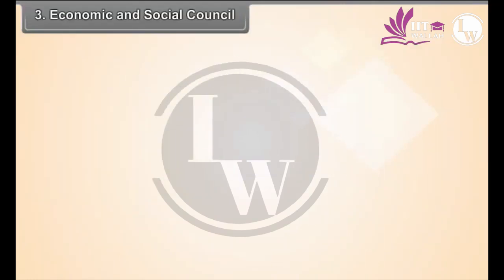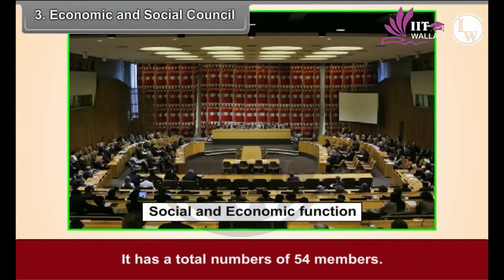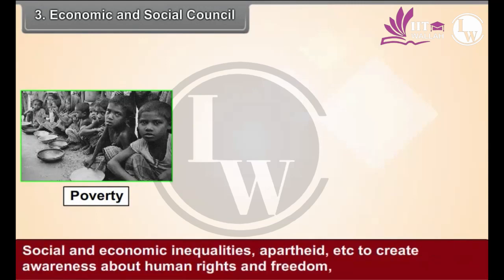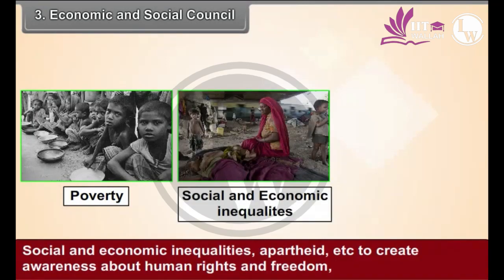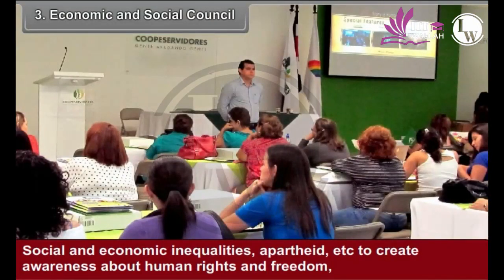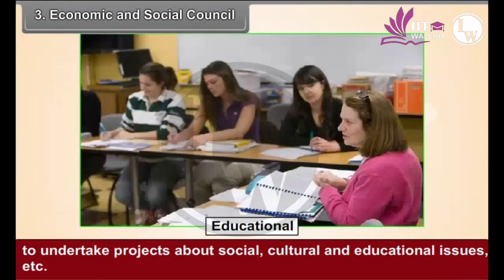The Economic and Social Council was established to coordinate the social and economic functions of the UN. It has a total of 54 members. This Council performs functions like initiating discussions on the global level on questions of poverty, social and economic inequalities, and apartheid. It also works to create awareness about human rights and freedom, and to undertake projects about social, cultural and educational issues.